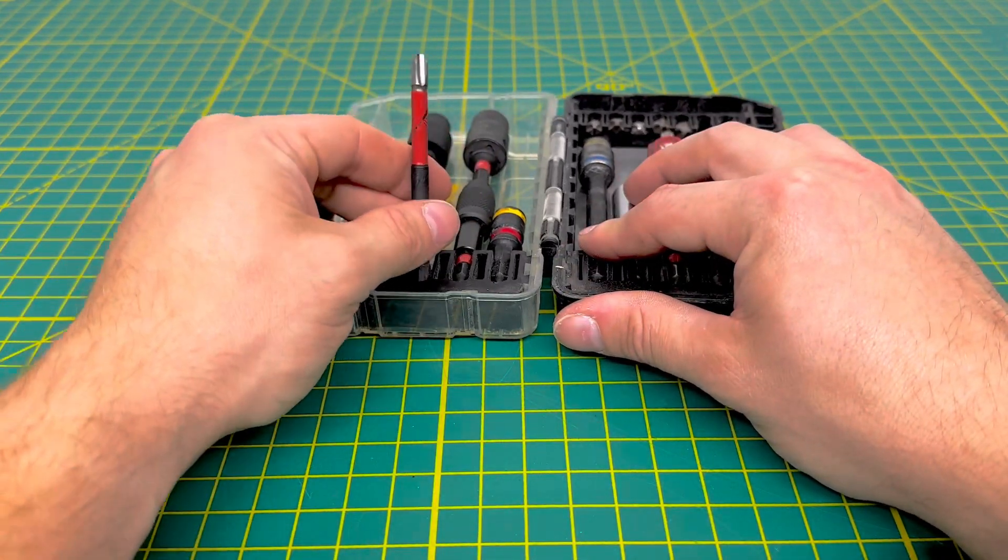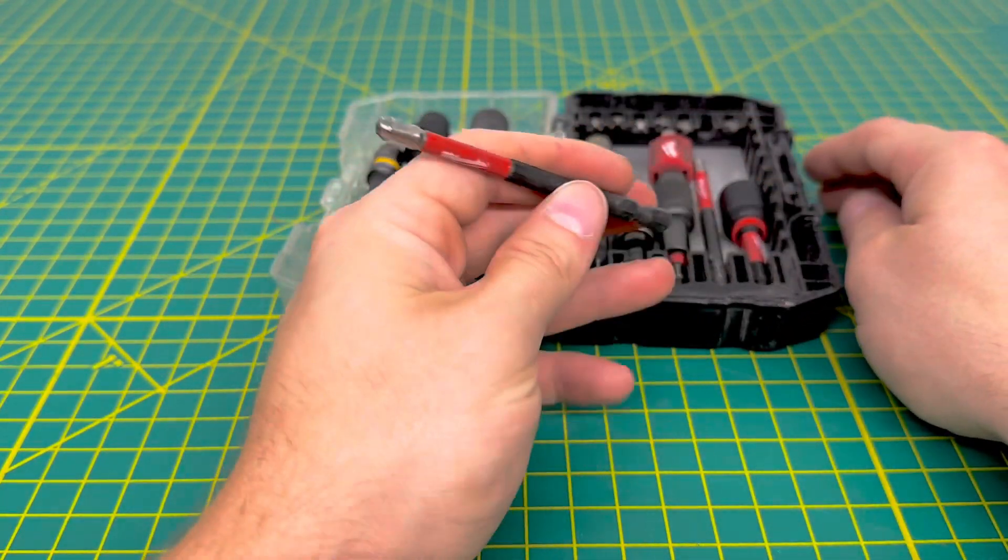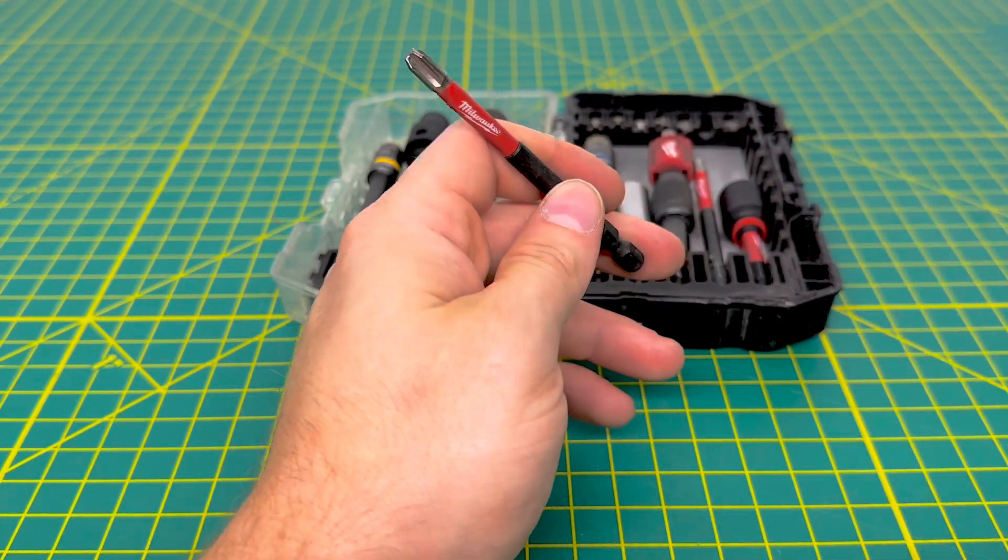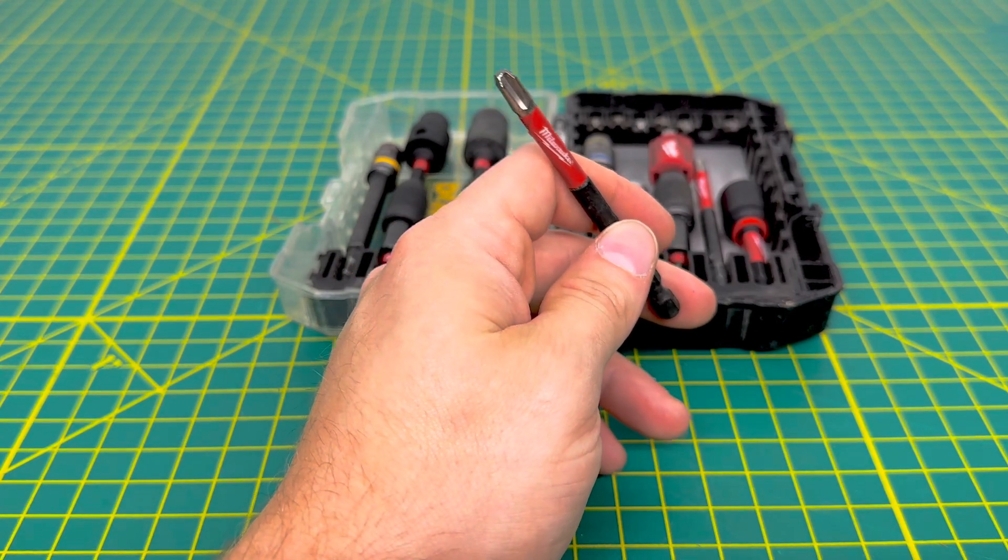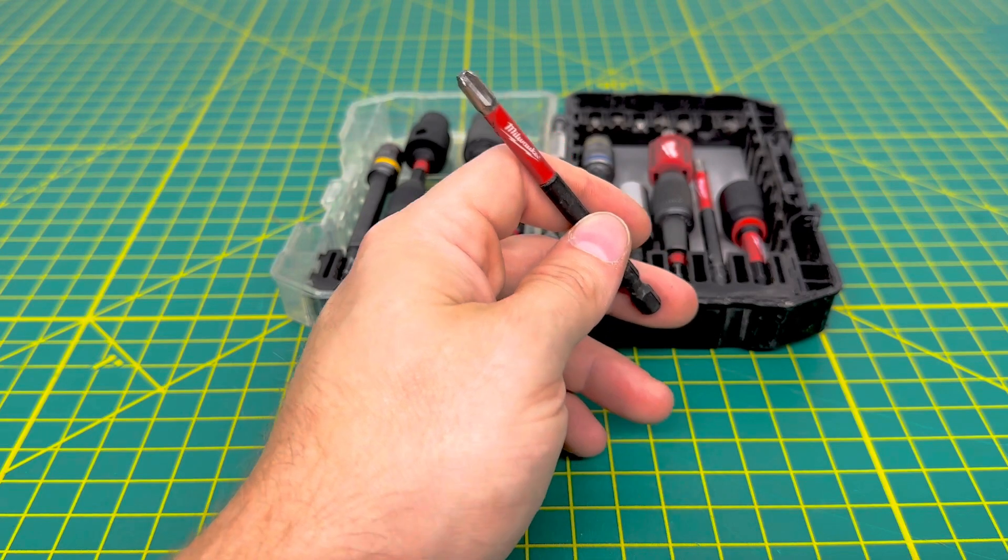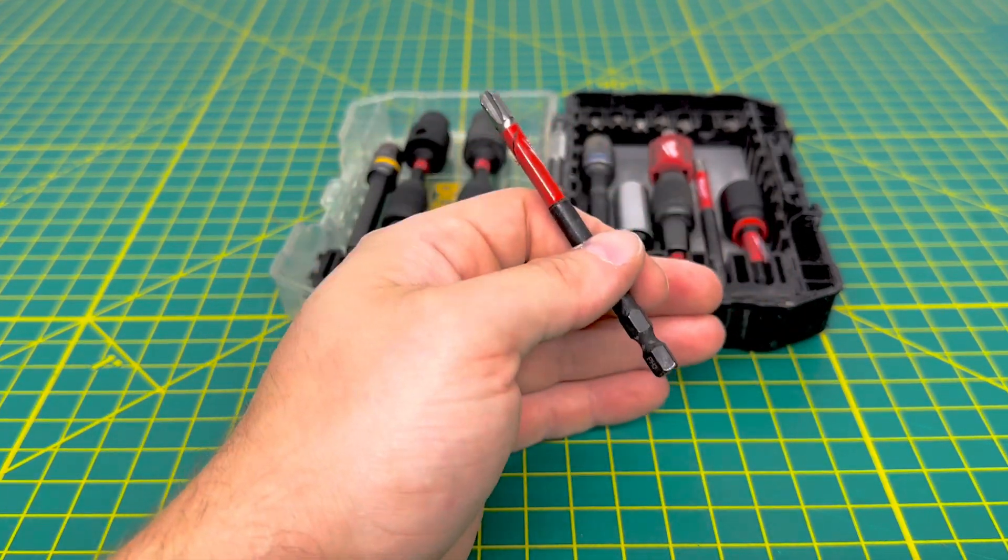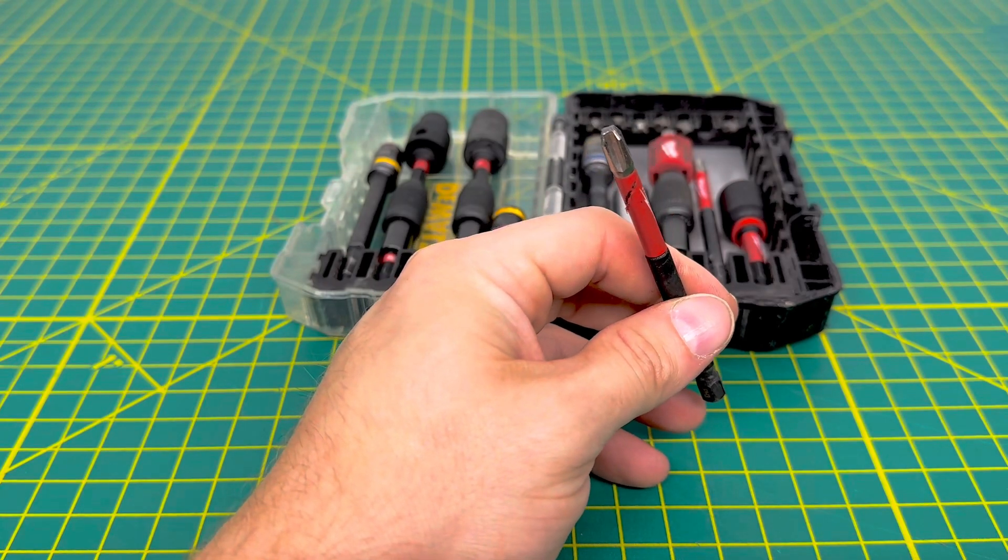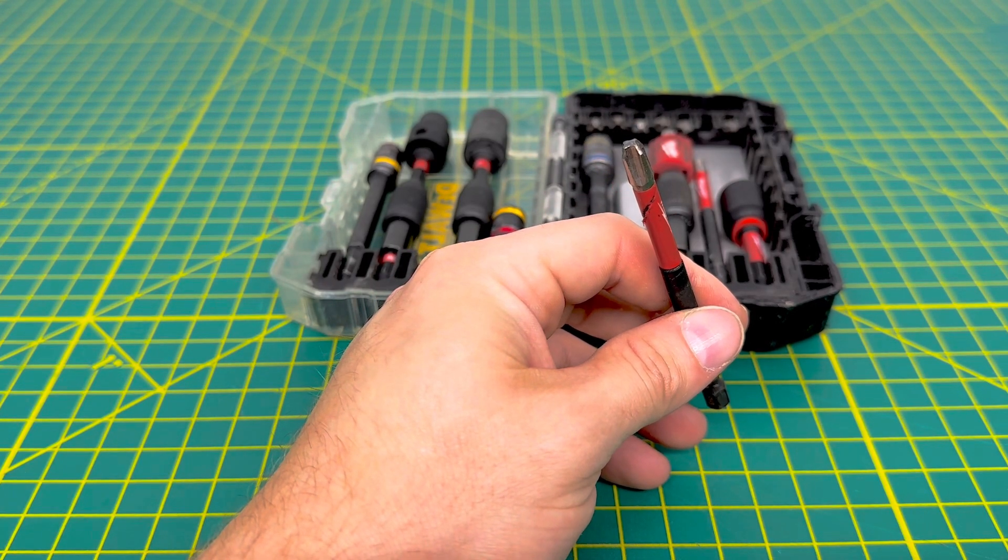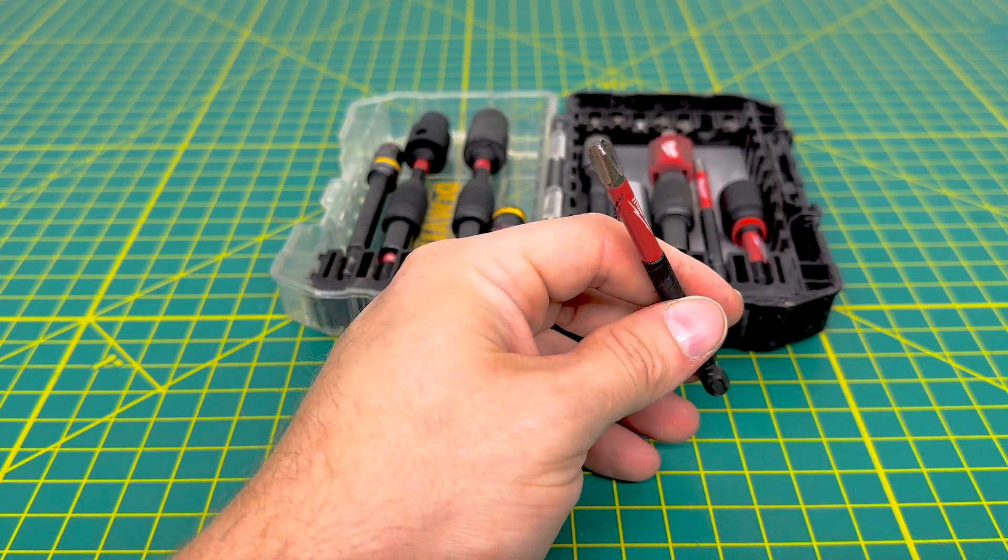Another thing that I do use quite a bit is these number 3 Phillips bits. Now these I tend to use mainly for when we are doing rooftops, mainly when we're doing the curbs for the rooftops, when we're securing them to the decking of the roof, whether it's wood or metal decking, we typically do like to use...